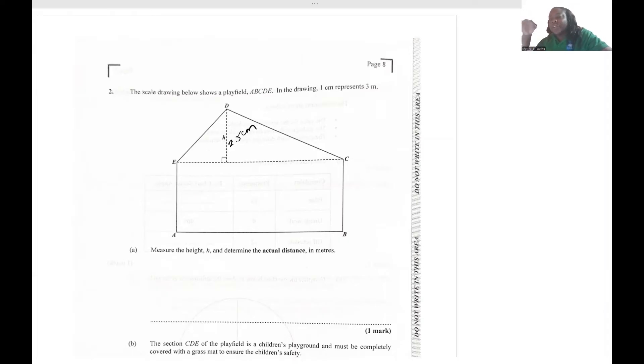The height is 2.5. They want us to determine the actual distance. The scale given is that one centimeter represents three meters. So if one centimeter represents three meters, then 2.5 centimeters, you multiply that by three and you get 7.5 meters.